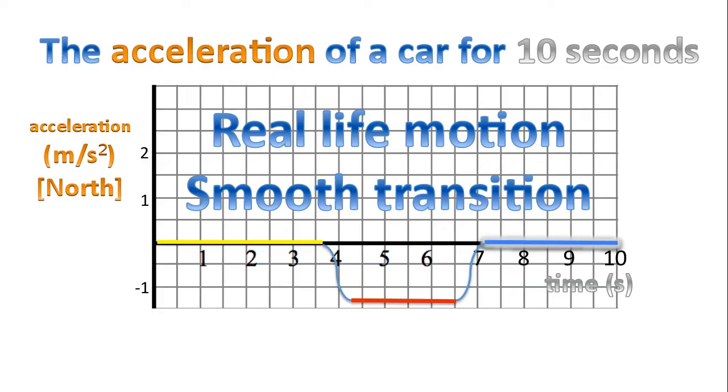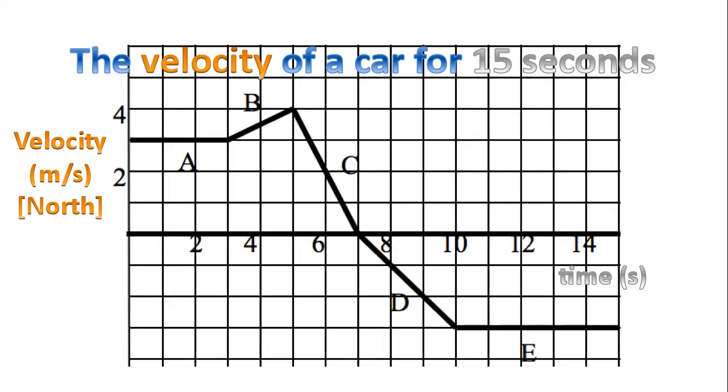However, for simplicity we're going to ignore that there's a smooth transition. All right, so here's the task I'd like you to complete. Here's the velocity of a car for 15 seconds. This time we have five different sections of acceleration. I'd like you to calculate the slope for each section and then try to create an acceleration-time graph.